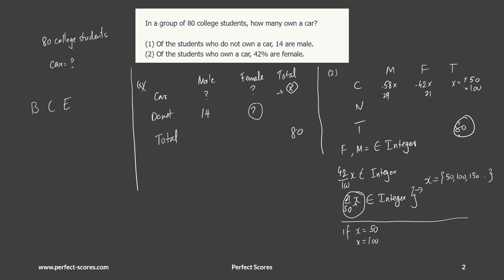So that means the only way x can have a value is if x is 50. There's no other value x can have, so that means this statement here is sufficient. That means this one is sufficient.